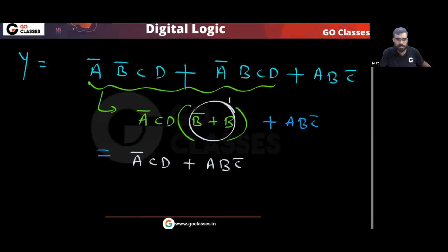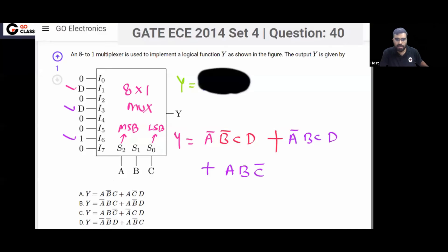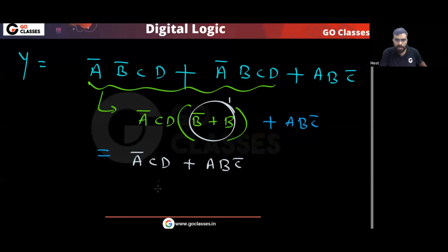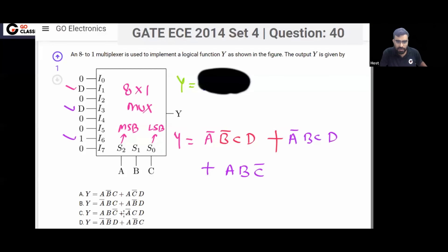Checking the options: Ā C D + A B C̄ — yes, option C will be the answer.